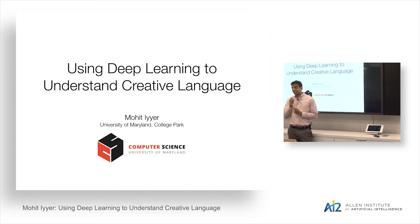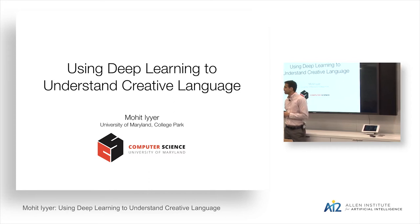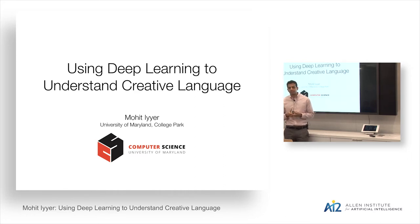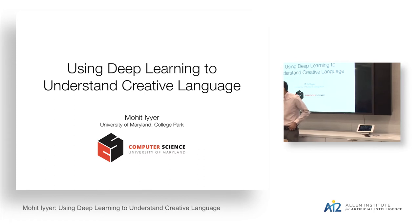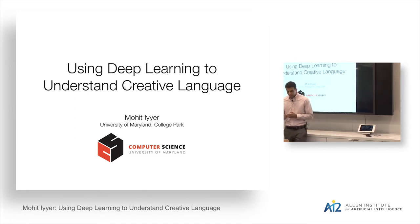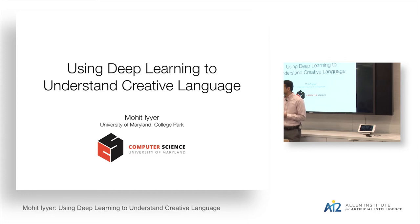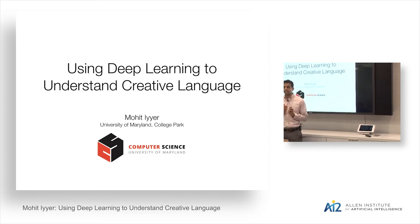Today I'll be talking about how we can use deep learning to solve a variety of problems involving creative language — texts like novels and short stories, and as we'll see a little later on, also comic books. Before I get into that, I wanted to briefly go over some standard NLP tasks and how we apply deep learning models to them, to differentiate them from the problems I'll be discussing later.